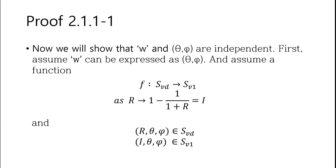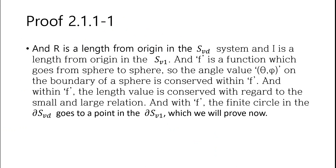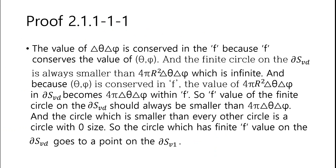Now we will show that omega and Zeta Phi are independent. First, assume omega can be expressed as Zeta Phi, and assume a function like this. R is a length value in spherical coordinate of SVD, and R is a length value in spherical coordinate of SV1. Zeta Phi is the length value in spherical coordinate in both systems. When R is infinite, R is 1. R is a length from origin in SVD system, and R is a length from origin in SV1. F is a function which goes from sphere to sphere, so the angle value Zeta Phi on the boundary is conserved within F, and the length value is conserved with regard to the small and large relation. With F, the infinite circle in DS3D goes to a point in DS3D one.